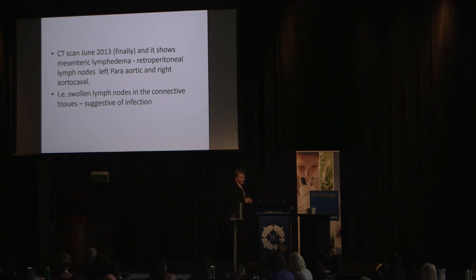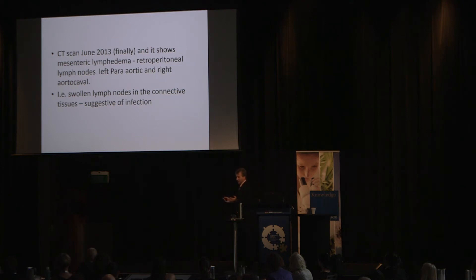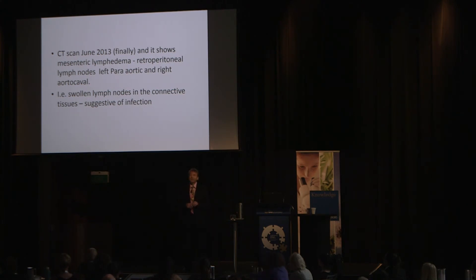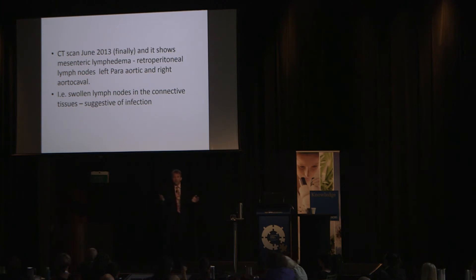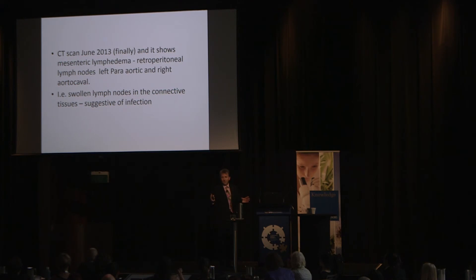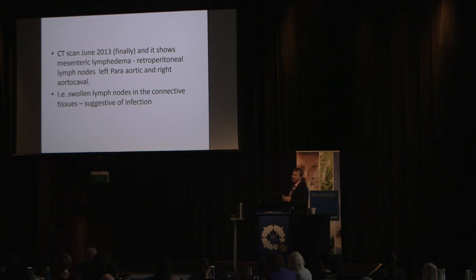A CT scan in June showed mesenteric lymphedema — retroperitoneal lymph nodes were swollen, particularly on the para-aortic and aortocaval sites — suggestive of an infection. The lymph nodes are collecting material and the body is attempting to eliminate it, collecting antibodies. There's a possibility that these antibodies are agglutinating to something and being pulled into the lymphatic tissue to be washed away. We have a physical indication of an infection, a symptom indication, and protein-related outputs consistent with infection, but no diagnostic definition.